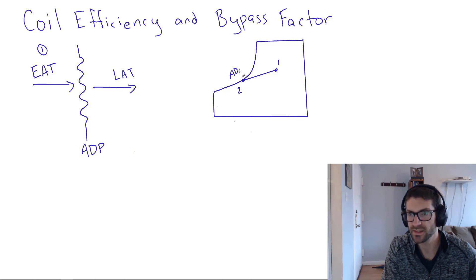It's idealistic to think that that would be our leaving air temperature. If the coil is 100% efficient, it will be. But if the coil is less than 100% efficient, then we won't quite get all the way down to point two. We'll end up somewhere close to two, but not all the way there. So maybe if it was an 80% efficient coil, we'd end up somewhere around here.